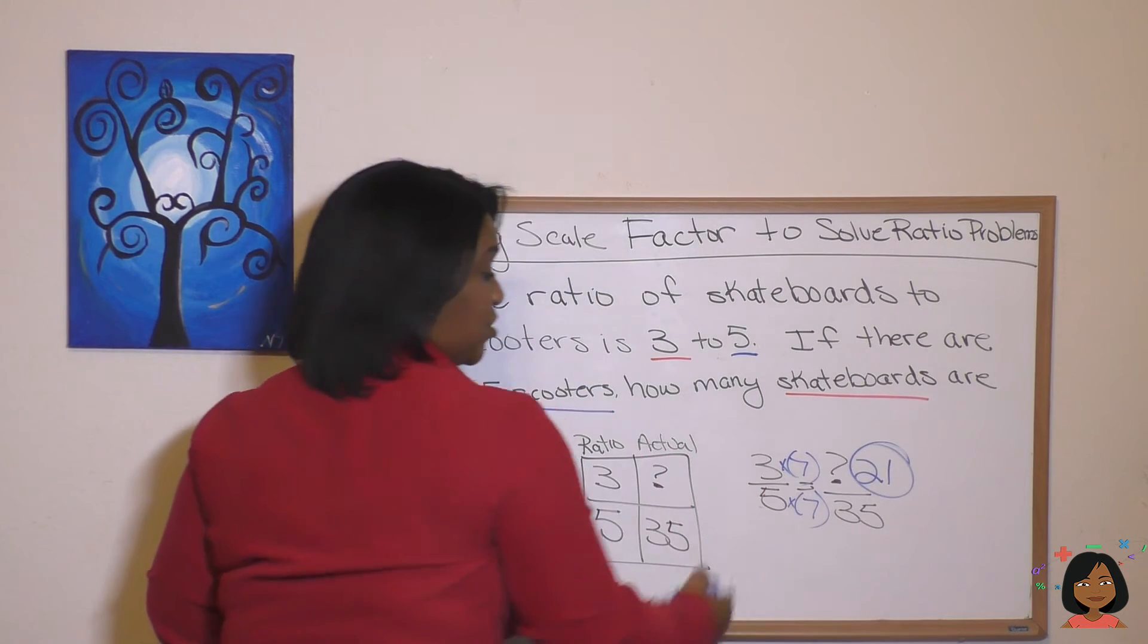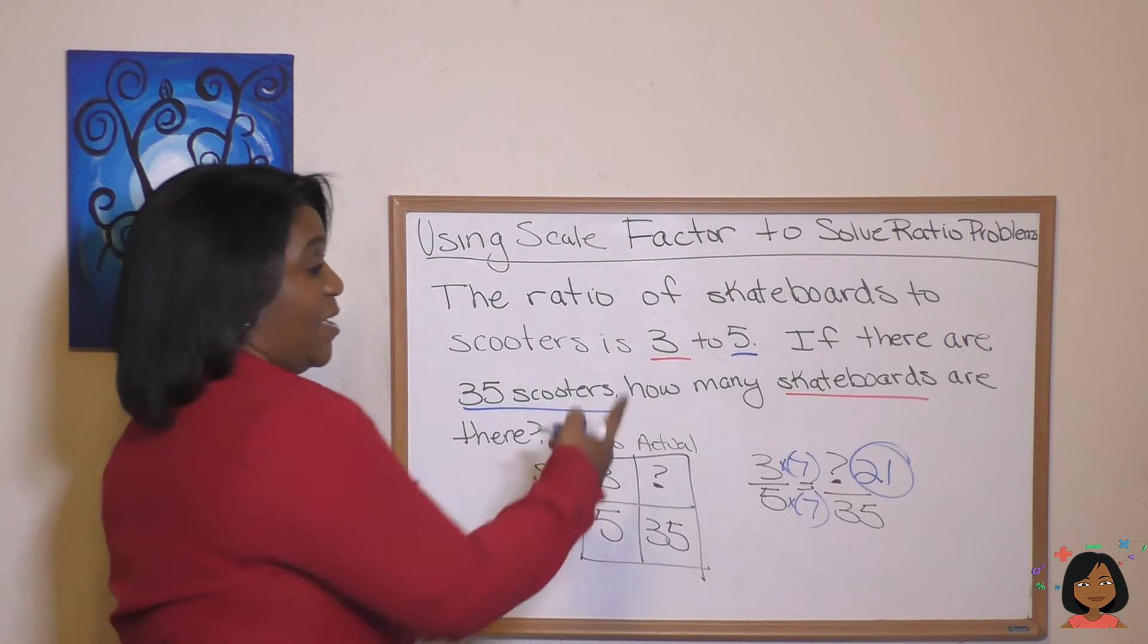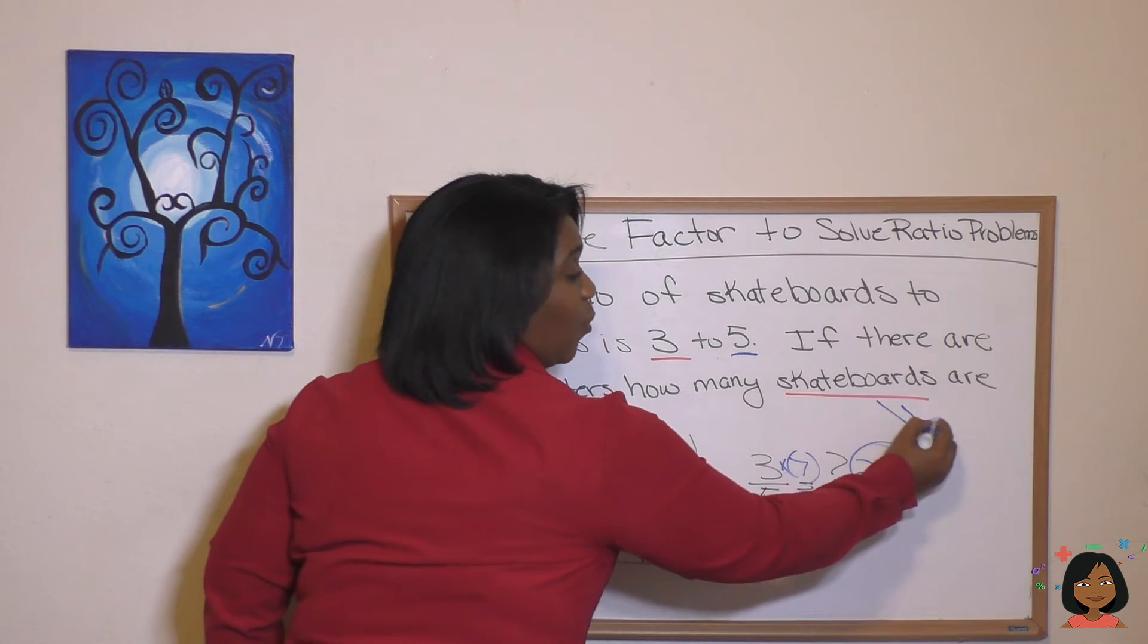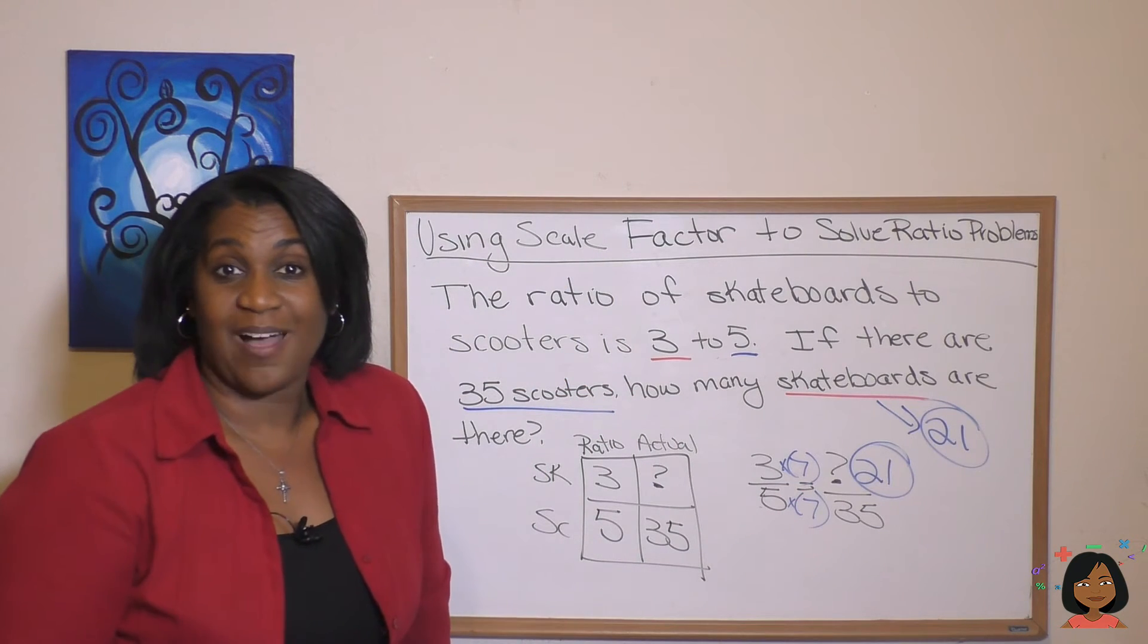Three times seven equals 21. That means that our question mark, which is the number of skateboards, is 21. How many skateboards? 21 skateboards is your answer. And we got that by creating a ratio box.